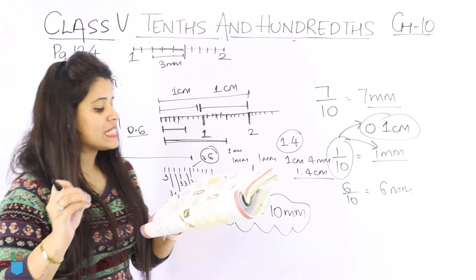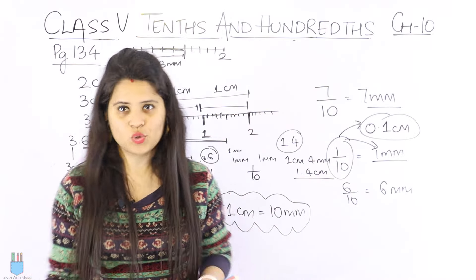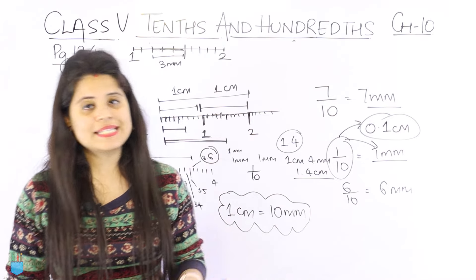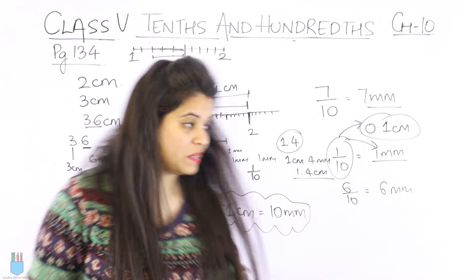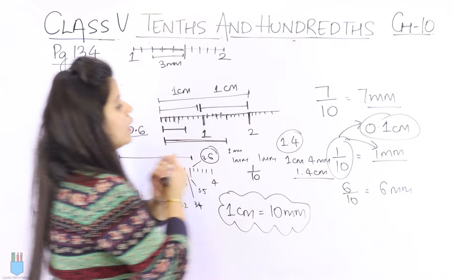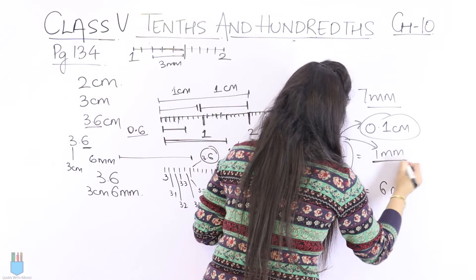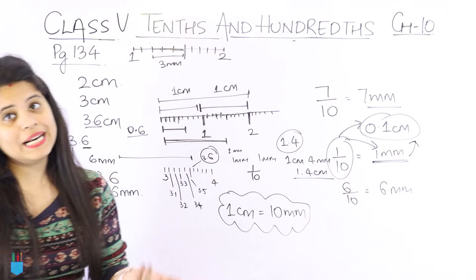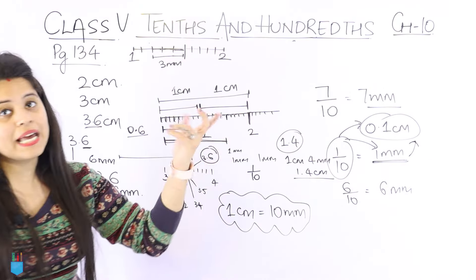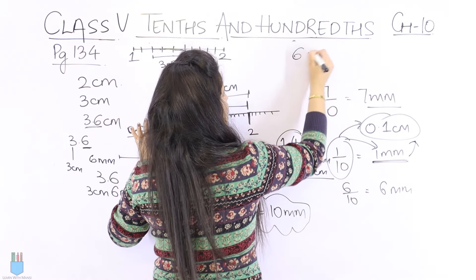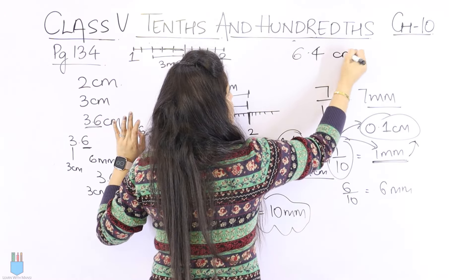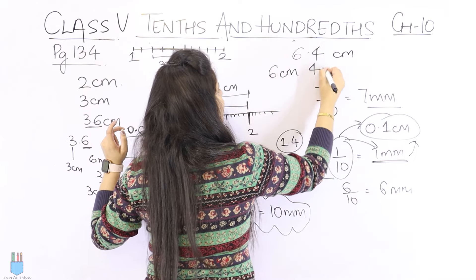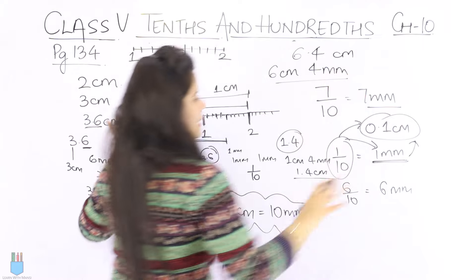Similarly, 1 millimeter is the same as 0.1 centimeter. 1 tenth means 1 millimeter, and 1 millimeter we can call 0.1 centimeter. Like if it's 6.4 centimeters, we can say 6.4 centimeters, or 6 centimeters and 4 millimeters — the same thing.